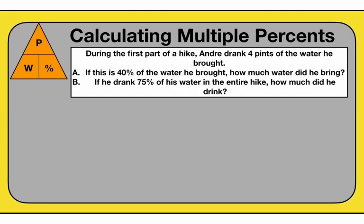What if we get multiple percents? What if a question asks about finding more than one percent of something? We're still going to use our same triangle to help with memorization of the process. During the first part of a hike, Andre drank four pints of the water he brought. That's probably a part — not all of the water he brought, just part of what he brought. If this is 40% of the water he brought, how much water did he bring? And then part B says: if he drank 75% of his water in the entire hike, how much did he drink?